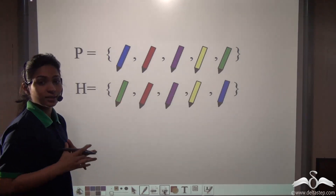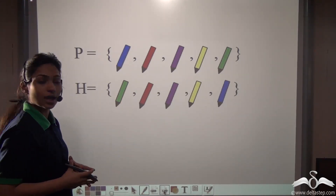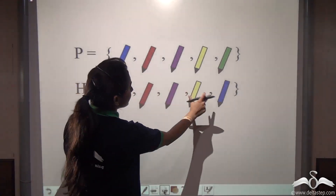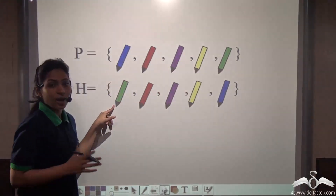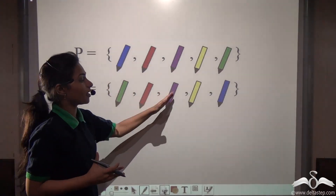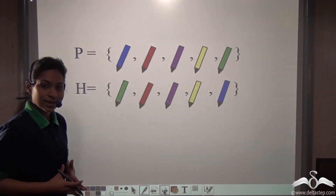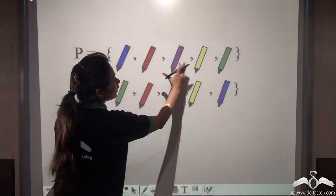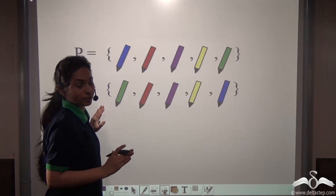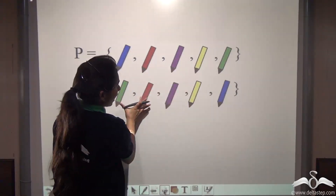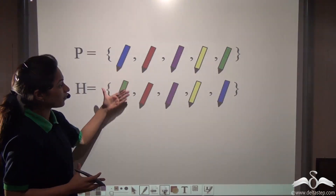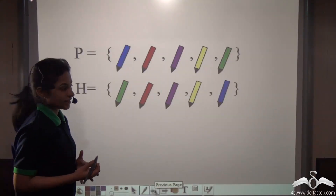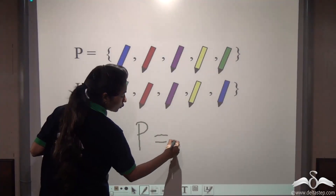Now, is your friend having the same pens as you? Check for the colours. Well yes, if you match the colours you will see these are the same pens, but the difference is they are arranged in a different order. We know that in sets, two sets are equal only when they have the same elements but the order does not matter. So we can say that set P is equal to set H.